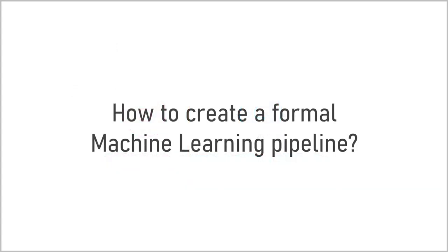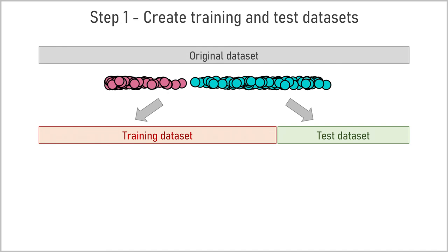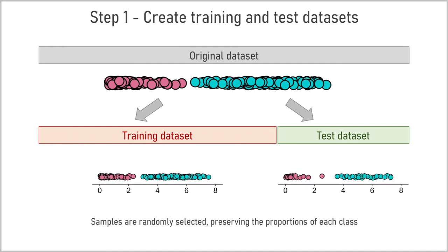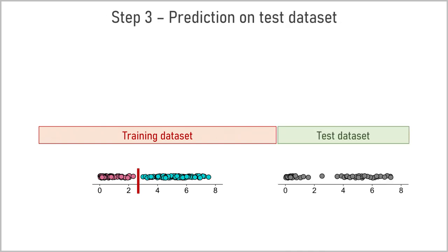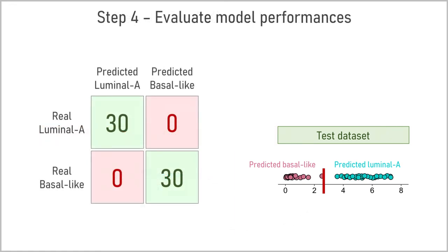The main idea to create a machine learning model is to establish a threshold for ESR1 expression level to separate different subtypes in the best possible way while limiting possible overfitting. In a standard machine learning pipeline, we separate the original dataset into a training and a test dataset, with samples randomly selected preserving the proportions of each class. The training dataset is used to train a classification model — in our simple case, this means identifying an optimal threshold to separate two classes. The position of the threshold may depend on the selected mathematical approach; for example, the solutions obtained with logistic regression or with an SVM model can be different. The test dataset is then used to evaluate the prediction of the model by applying the same threshold and predicting the molecular subtype for each point.